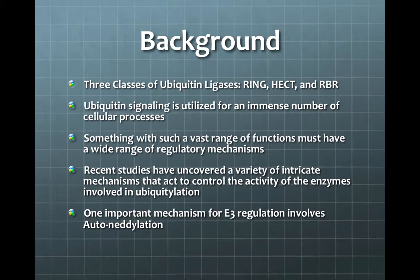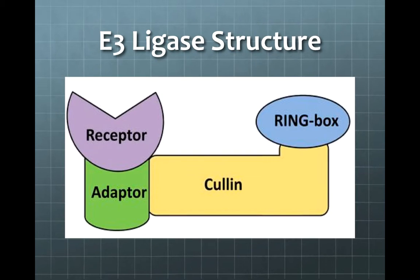Today, we will focus on a ubiquitin-like protein that regulates part of the RING class of E3 ligases. RING E3s are the largest class of E3 ligases with over 600 members in the human genome. Cullin RING ligases are a superfamily of RING E3s responsible for up to 20% of ubiquitin-dependent protein turnover in the cell. The Cullin RING ligase complex consists of a highly helical Cullin subunit that provides a scaffold for assembly of a functional E3 ligase.